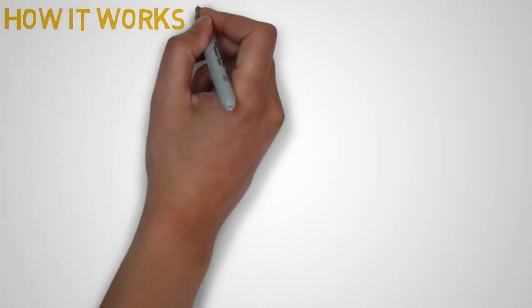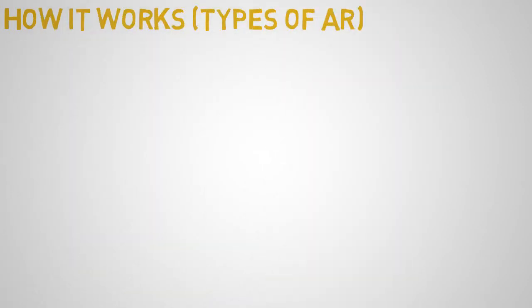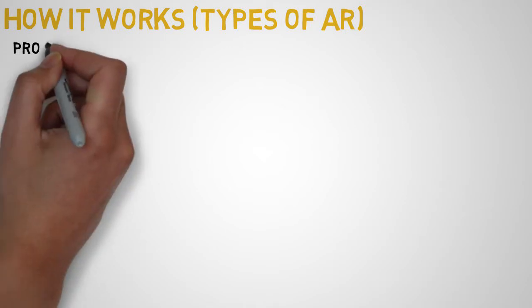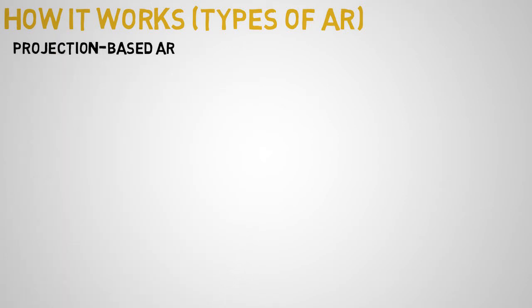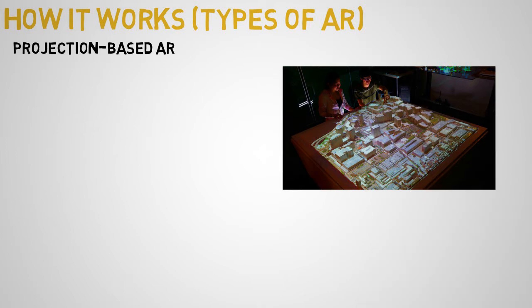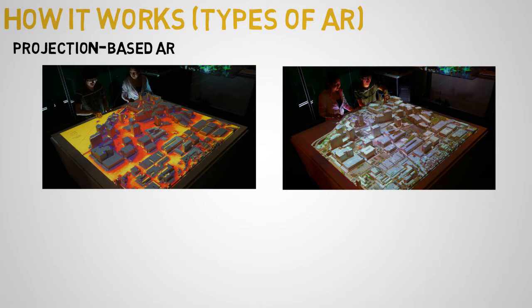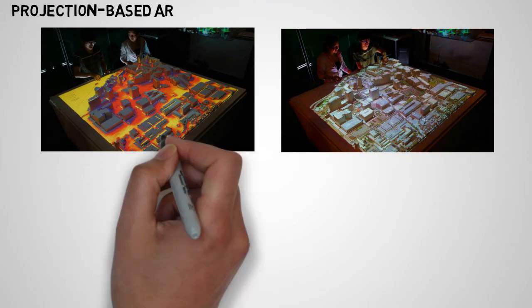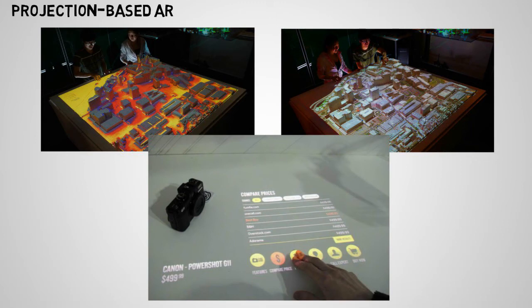So how does it work? To understand how augmented reality works, let's first look at the various types of AR. The first one is projection-based augmented reality. As the name suggests, projection-based AR functions using projection onto objects — it is a simple projection of light to a surface. Here you can see how digital information is overlaid for a camera and users can interact by touching virtual buttons.